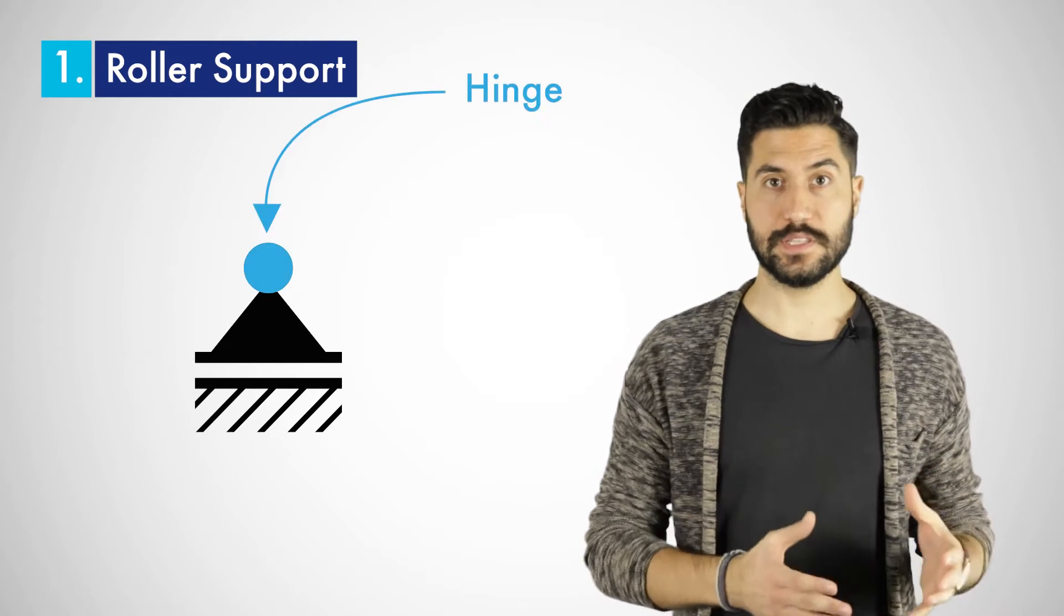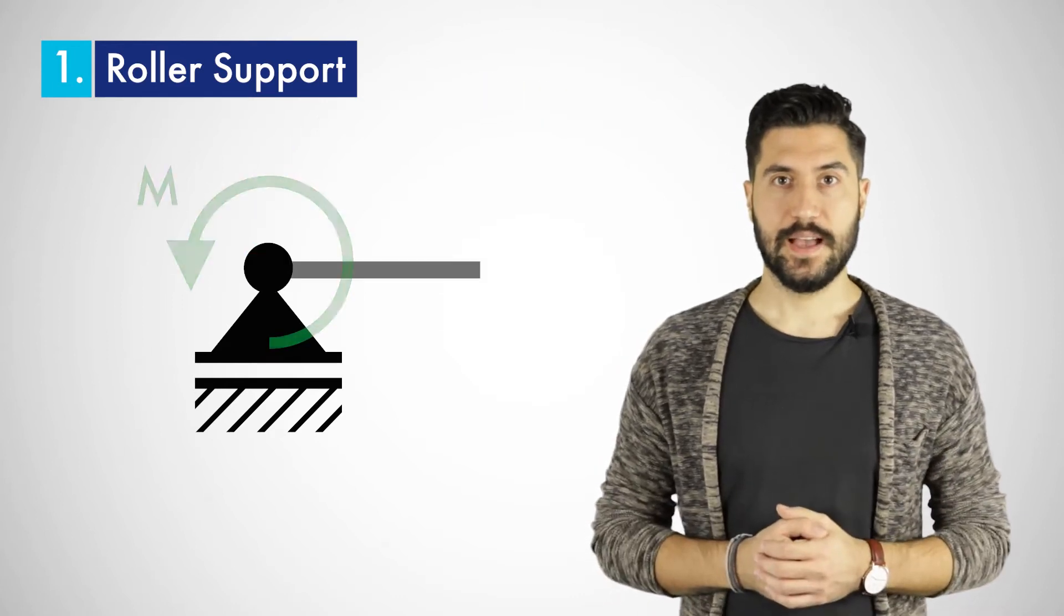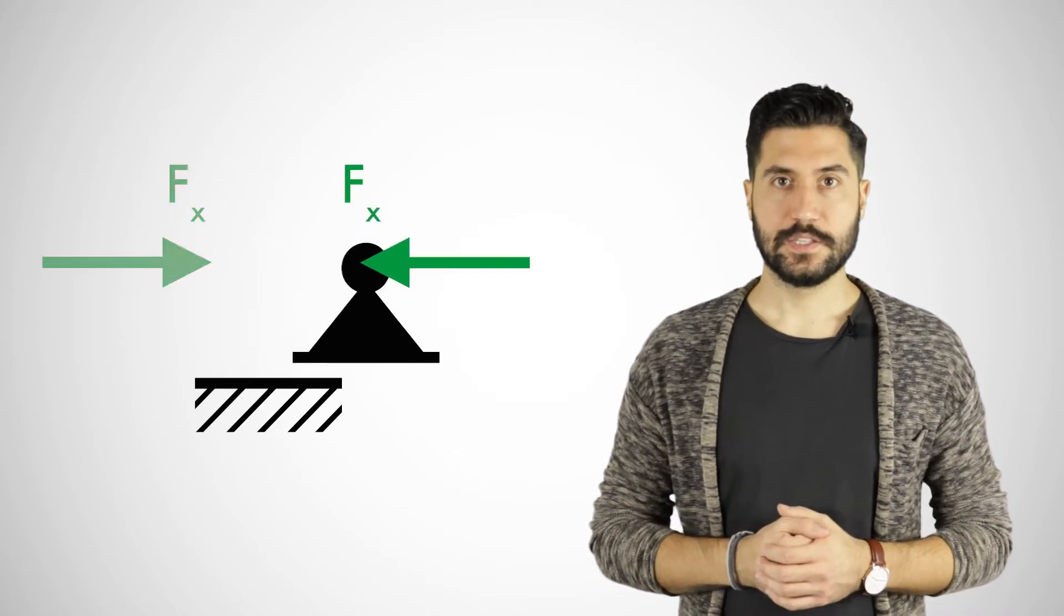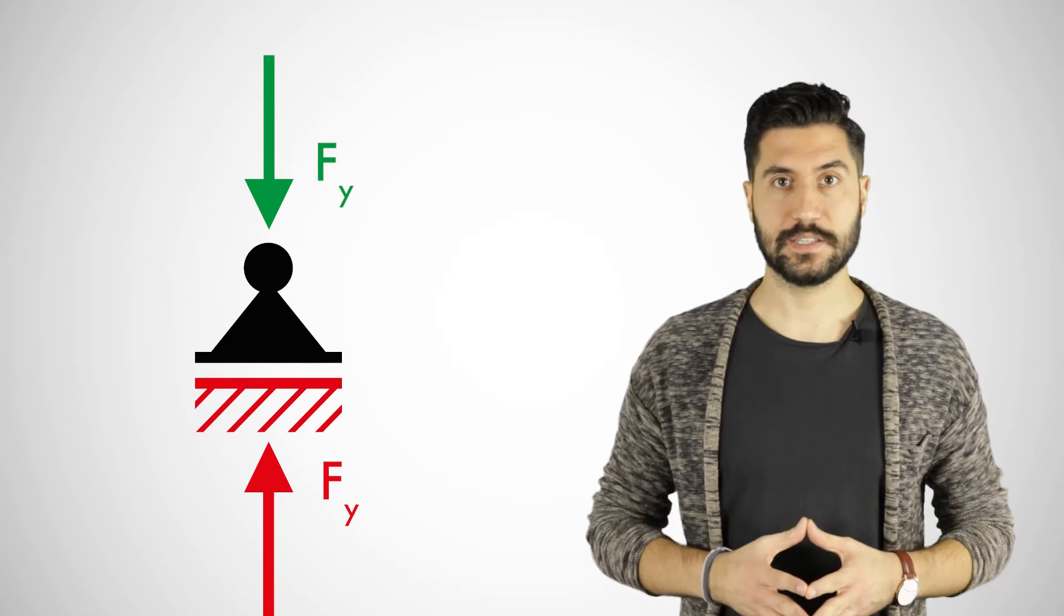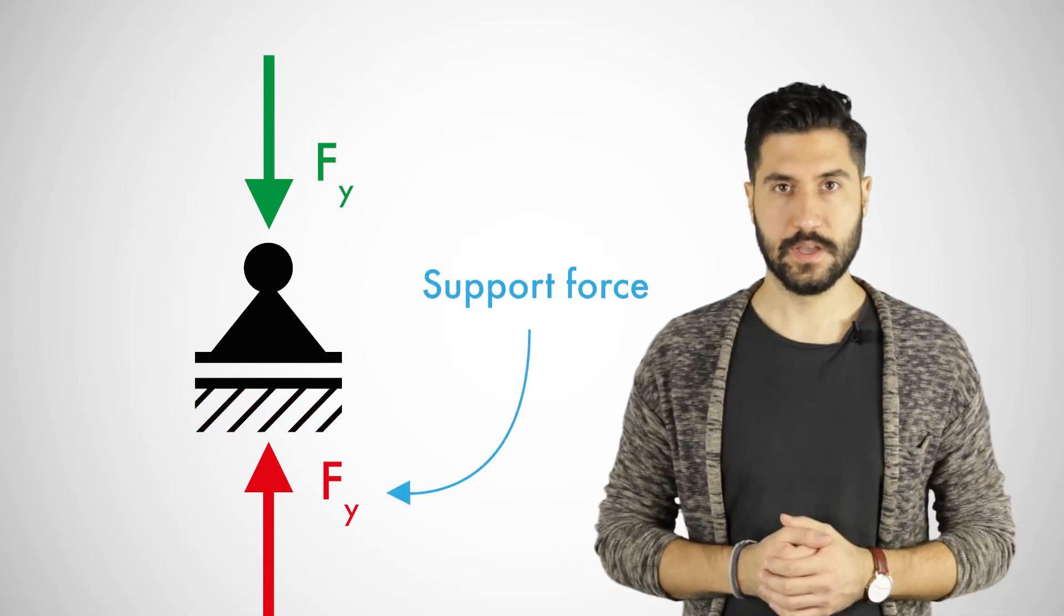Let's start with a roller support. A roller support enables rotations and horizontal displacements and offers resistance only against vertical displacements. So it can absorb only forces in the wide direction and therefore provides only one support force. Roller supports are often utilized for bridges.